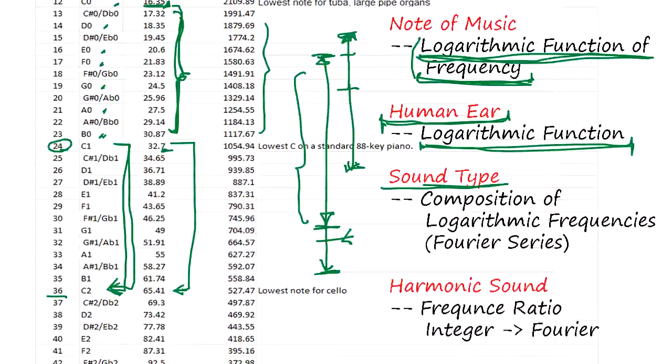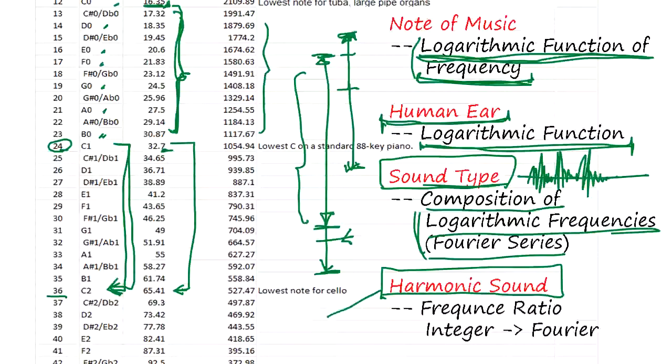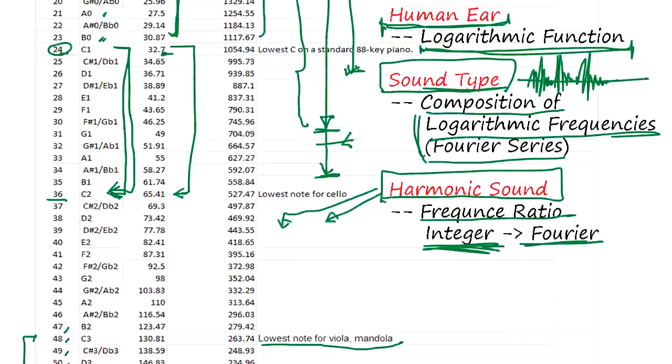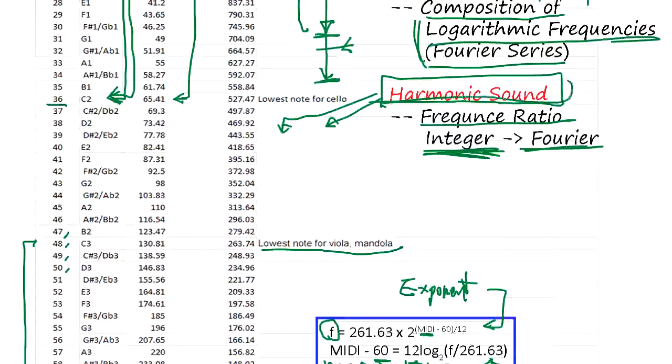Now sound type. Flute, piano has all different sound types. When you play, all the waveforms look different, right? This is composition of logarithmic frequencies. And it's basically Fourier series, and I'll explain this in a little bit more detail later. And not only sound type, but harmonic sounds. Certain sound combinations are good for human ear, and certain combinations are bad for human ear. There is so-called harmonic sound combination. That frequency ratio is integer, and that is also explained by mathematical formula.